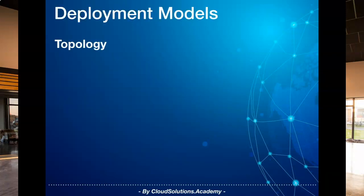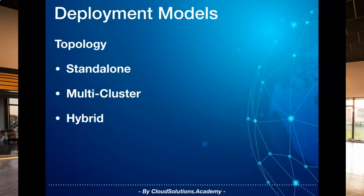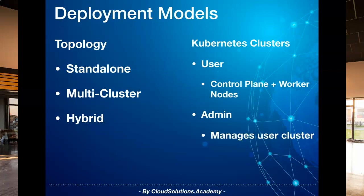Anthos clusters on bare metal supports three deployment models: standalone, multi-cluster and hybrid deployment model. Based on the deployment model, Kubernetes clusters are installed for running and managing workloads. The Kubernetes clusters can be of two types: user cluster and admin cluster. The user cluster runs your workloads — it consists of control plane nodes for managing the cluster and its state, and worker nodes which execute the workload. Admin clusters are used to manage user clusters like creating, updating and deleting user clusters, and only consist of control plane nodes where the Anthos management components are deployed.